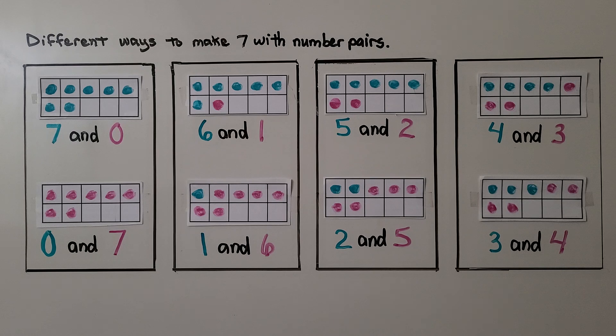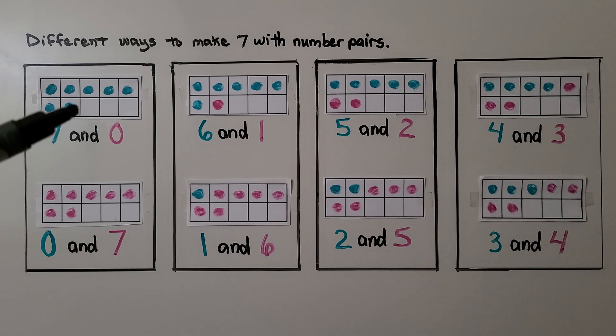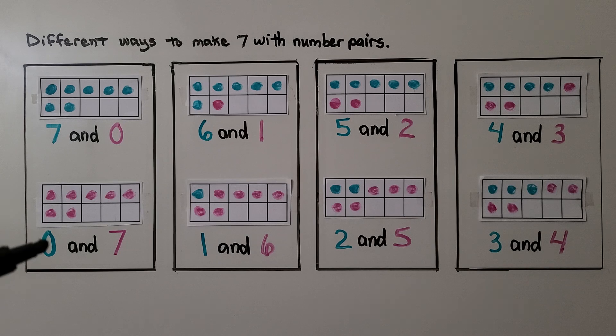There are different ways to make 7 with number pairs. That means with 2 numbers. We could use 7 blue counters and 0 pink counters. We could also use 7 pink counters and 0 blue counters. 7 and 0 or 0 and 7.